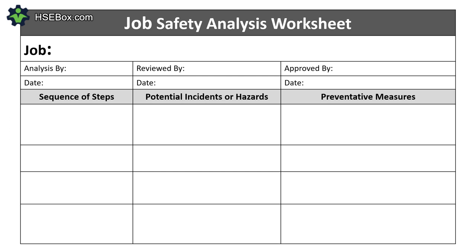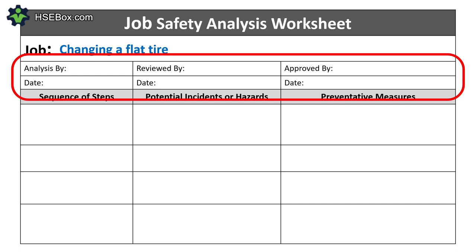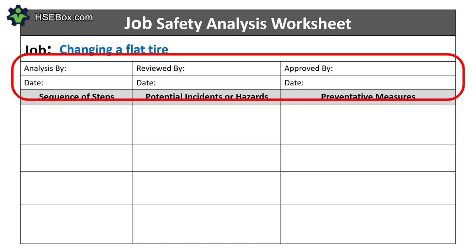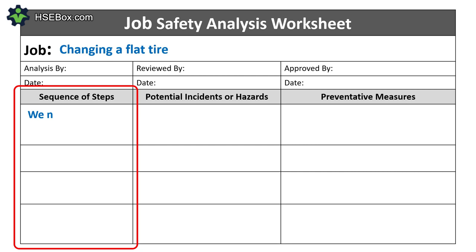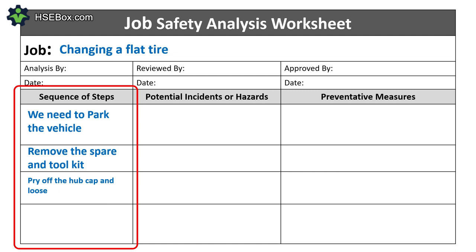Let's use this type of form — you can find it on our site, check the link in the description. First, fill in the task to be assessed: changing a flat tire. In your JSA you should also fill in the name of the person who carries out the analysis, the reviewer, the person who approved the JSA, and the dates. Then fill in the sequence of steps: park the vehicle, remove the spare and tool kit, and pry off the hubcap and loosen the lug bolts. For this video we will consider only these three tasks.